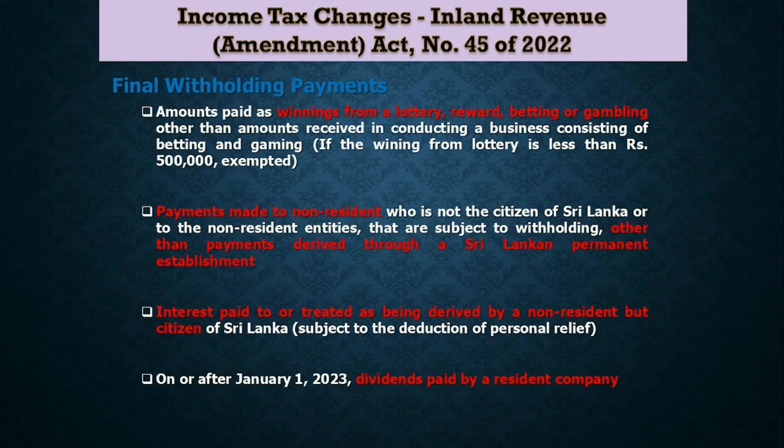The fourth item is the amended one, introduced by Amendment Act No. 45 of 2022. From January 1, 2023, dividends paid by a resident company are also a final withholding payment. Once the resident company has deducted withholding tax on the dividend, in the hands of the withholdee it is a final withholding payment, and there is no requirement to include the dividend as part of taxable income.